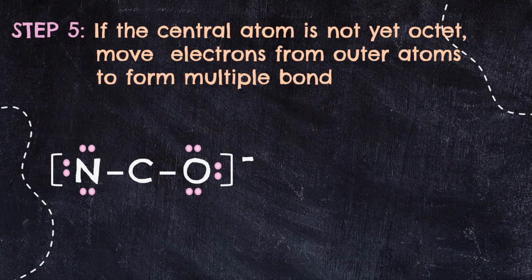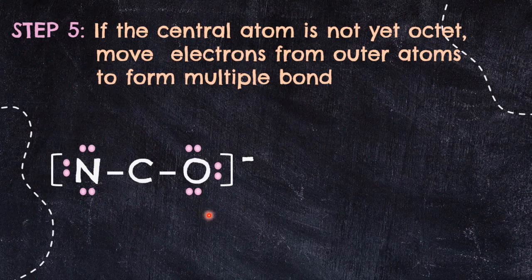Since carbon is located on period 2, it must achieve the stability of octet — 8 electrons must surround it. At the moment we only have 4 electrons from the covalent bonds. The other 4 electrons could be obtained from the terminal atoms' lone pairs. Since we have two different terminal atoms, nitrogen and oxygen, there will be several possibilities for where the multiple bond forms. Let's show all possibilities since we'll use this example when discussing the most plausible structure.